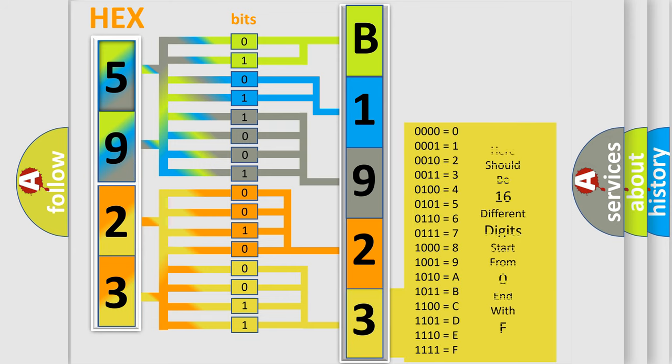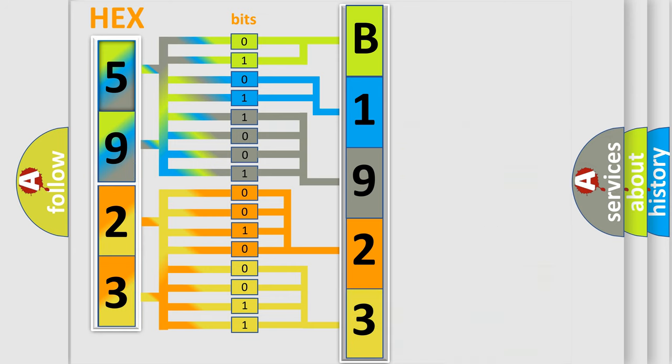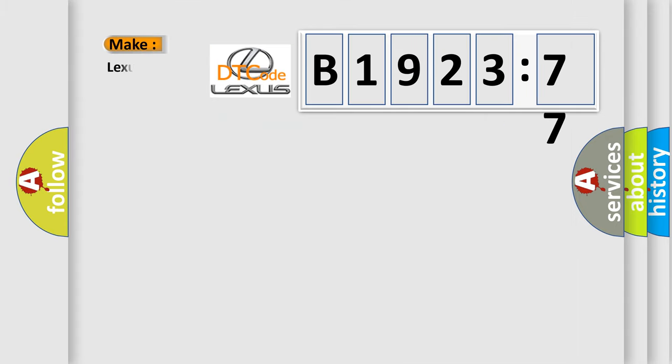A single byte conceals 256 possible combinations. We now know in what way the diagnostic tool translates the received information into a more comprehensible format. The number itself does not make sense to us if we cannot assign information about what it actually expresses. So, what does the diagnostic trouble code B192377 interpret specifically?